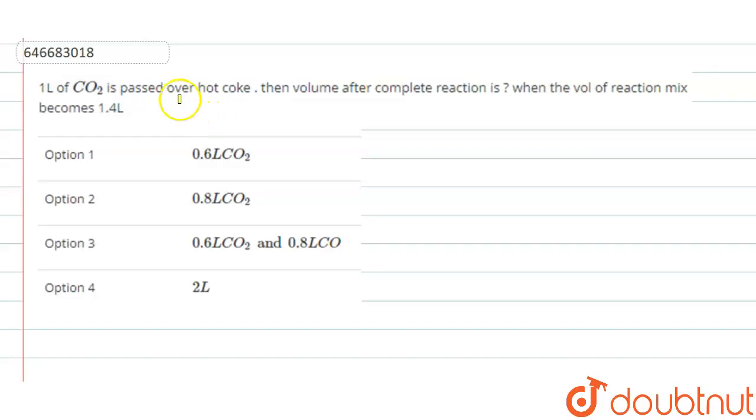Hello everyone, let us see the following question. If there is 1 liter of carbon dioxide passed over hot coke, then volume of the complete reaction when volume of a reaction mixture becomes 1.4 liter.